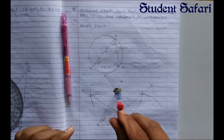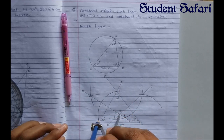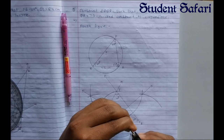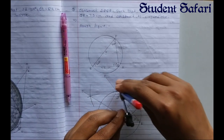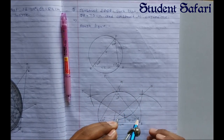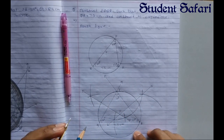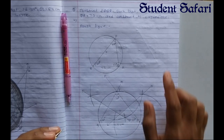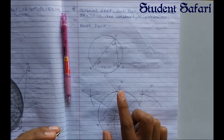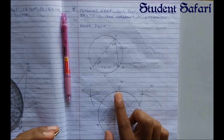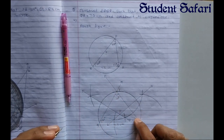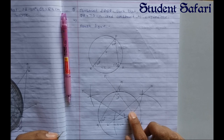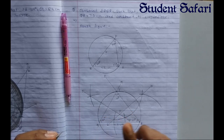Draw the circumcircle passing through all three points of triangle PQR. Remember: to draw the circumcircle, bisect any two segments of the triangle; to draw the incircle, bisect any two angles of the triangle.